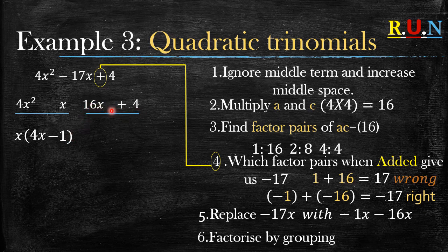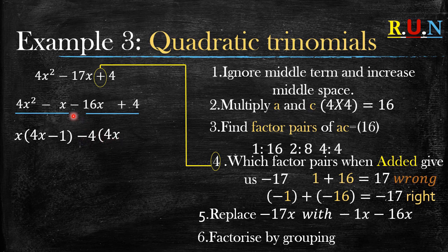For the next two terms, the highest common factor is negative 4. So negative 16x divided by negative 4 gives positive 4x, because negative divided by negative gives positive.